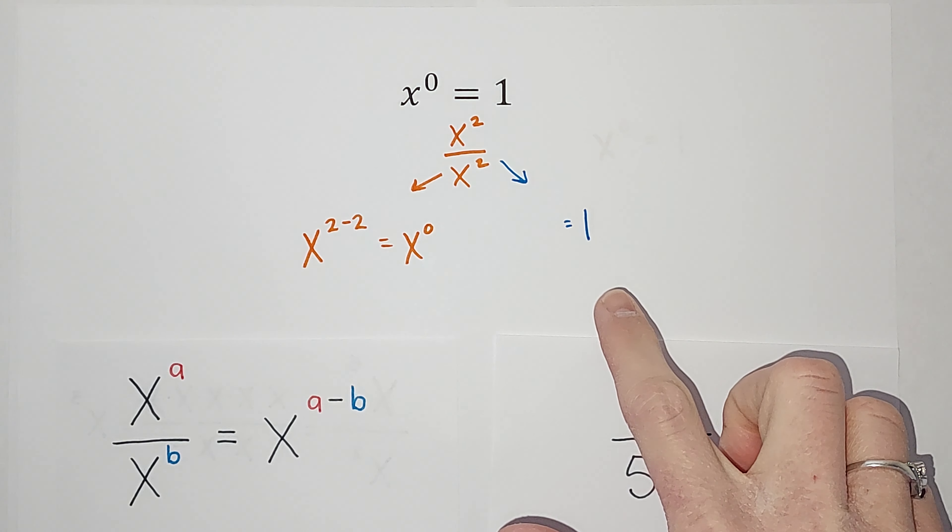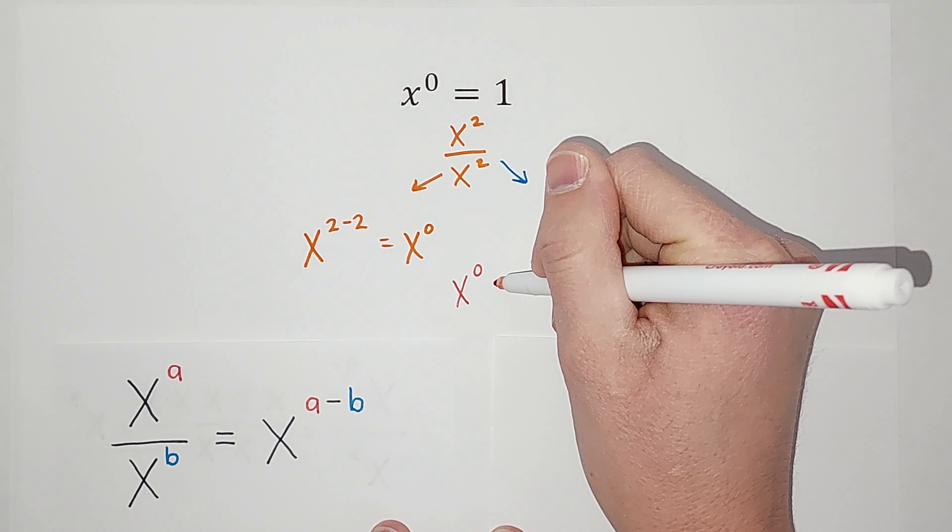Oh my gosh! So we can assume if x to the zero power equals this, and one also equals this, what does that mean? That means that x to the zero power equals one.